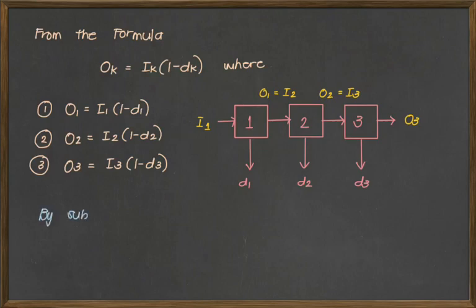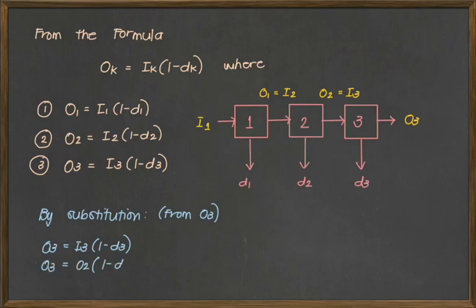Now we want to substitute the values from the three equations we have written above. So this will be coming from O sub 3. So O sub 3 will be I3 times 1 minus d3. So substituting the value of I3 with the value of O2, that will now become O2 times 1 minus d sub 3. Then O sub 2 is equivalent to I sub 2 times 1 minus d sub 2 based on the second equation. So therefore, our O sub 3 will be further expanded into this form.